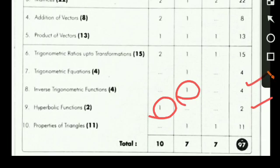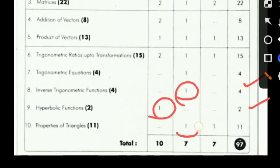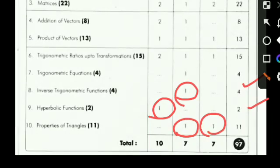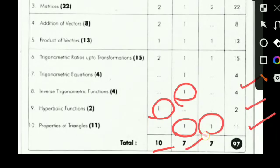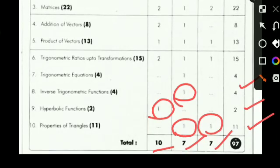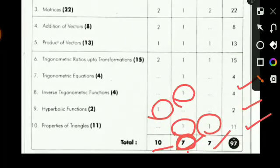Now the last topic, Properties of Triangles. Properties of Triangles has 1 four-marks question, 1 four-marks question, and 1 seven-marks question. Total equals to 11 marks. So, 2-marks questions are 10, 4-marks questions are 7, 7-marks questions are 7. Total number of 4-marks questions is equal to 7, but you have to attempt only 5 questions out of 7.